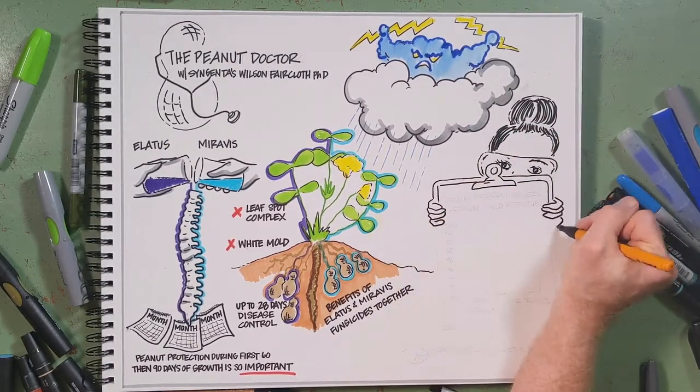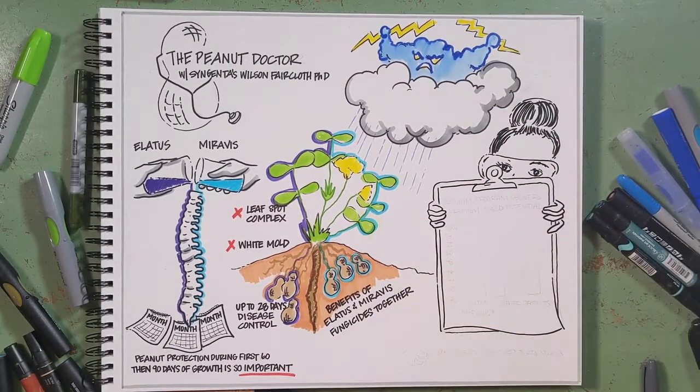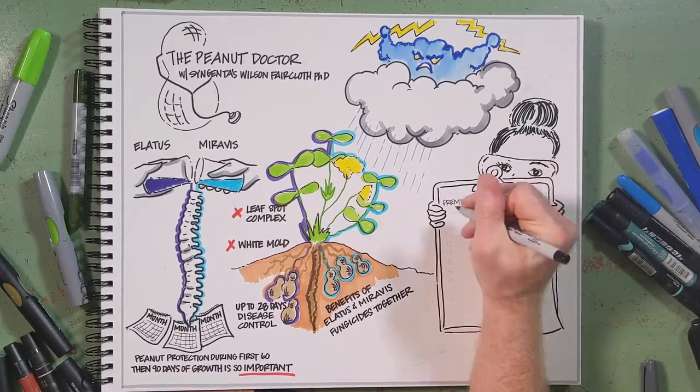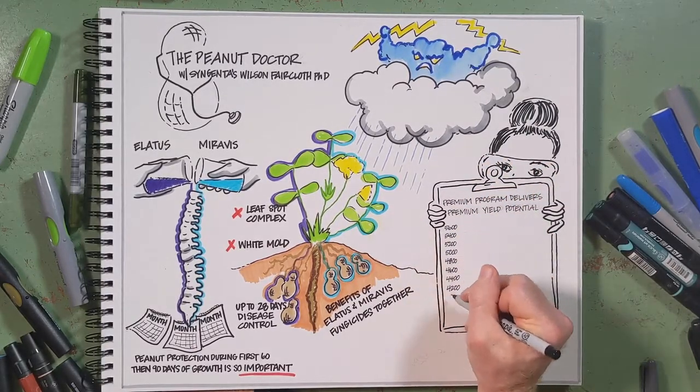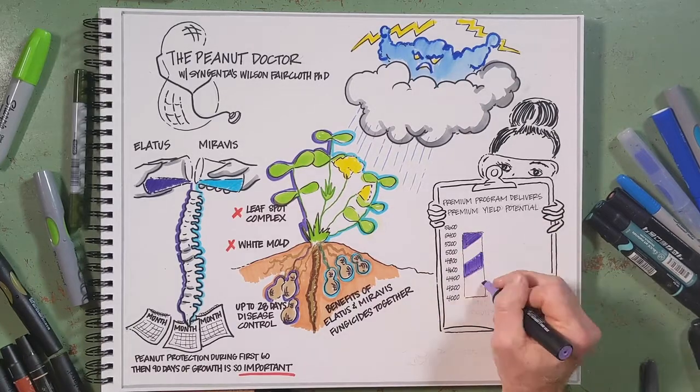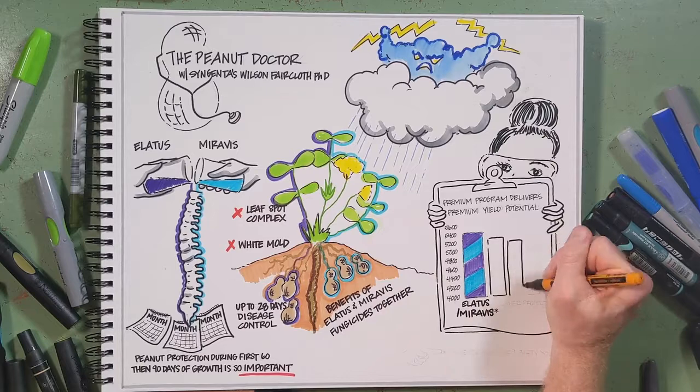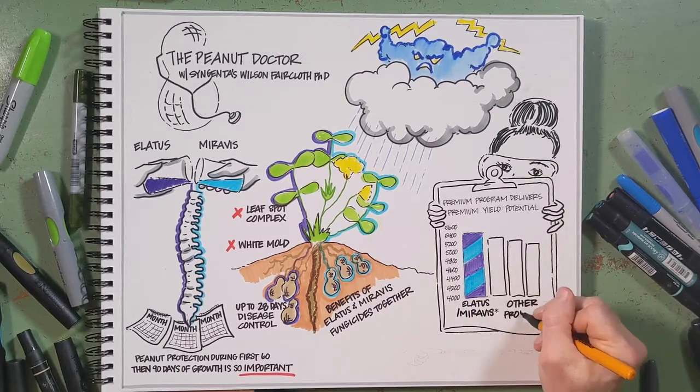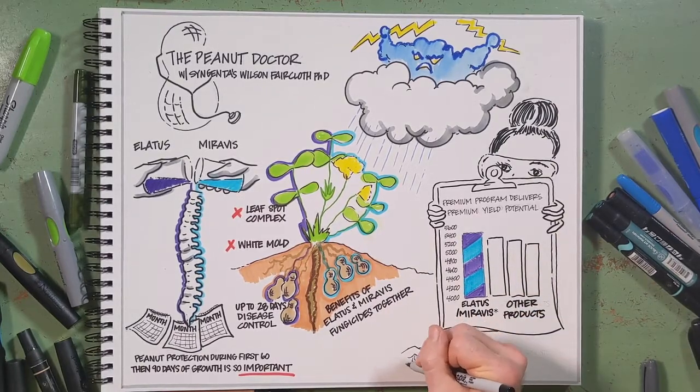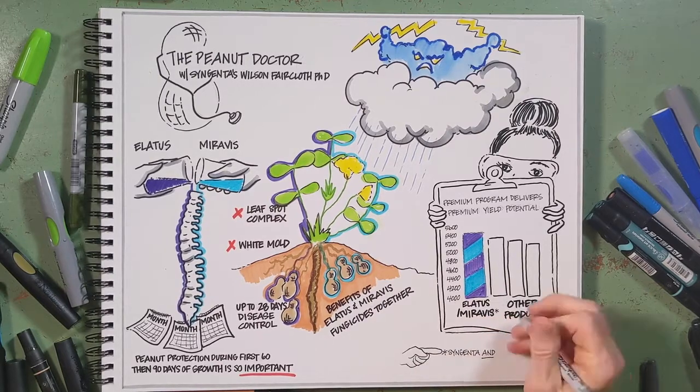Time and time again, our research results prove that Elatus and Miravis not only give you best-in-class disease control and the ability to be flexible in your applications, but they give the highest yield. Many studies, including the University of Georgia and our own Syngenta studies, have shown that Miravis and Elatus programs are at the top of yield potential.